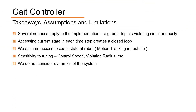In conclusion, there are several nuances about the implementation that we haven't covered. At each step, we read the current state and plan based on it, forming a closed loop. Consequently, we assume access to the exact state, which can only be achieved in real life using motion tracking systems. We haven't explored the sensitivity of the gate controller to some tunable parameters, and we also don't use the dynamics of the system to plan the gate.